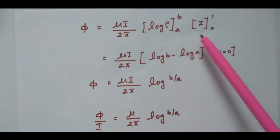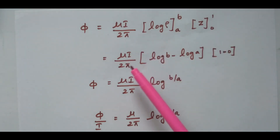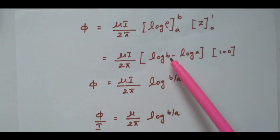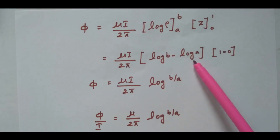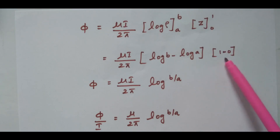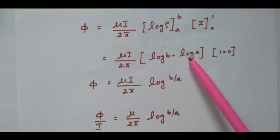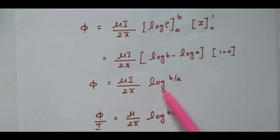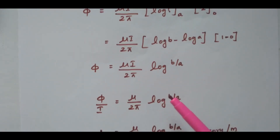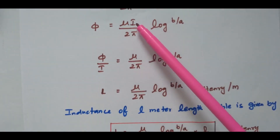So π = μI/(2π) is constant. Integral of 1/ρ is log ρ, with limit A to B. Integral of dZ is Z with limit 0 to 1. Substituting limits: μI/(2π) · [log B − log A] · (1 − 0). Log B − log A can be written as log(B/A). This becomes 1. Now to find the inductance, we bring I to the denominator.